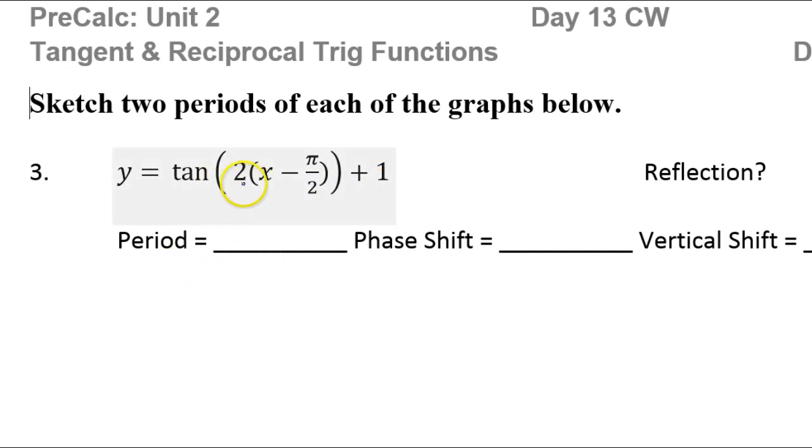First of all, the period. I see that B value there in the front. That affects the period, so let's figure that out real quick. We know that the period is always the normal period divided by the B value. In the case of tangent and cotangent, remember that the regular period is π, as opposed to sine and cosine and secant and cosecant.